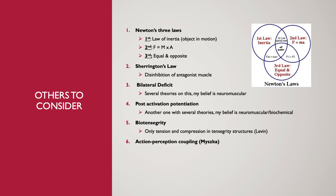Biotensegrity has been my big focus for about a year to a year and a half. I won't get too deep here as I'll probably do a follow-up specifically on it, but the main thing is it's based around the fascial system — an incredibly powerful system in the human body that responds differently than muscle. In my opinion that should affect exercise selection. Similarly, action-perception coupling is something Sean Mitzka and Ross Cooper are big on — my understanding is it's the most sport-specific way to approach things, which can affect movement selection and how you lay out your program.